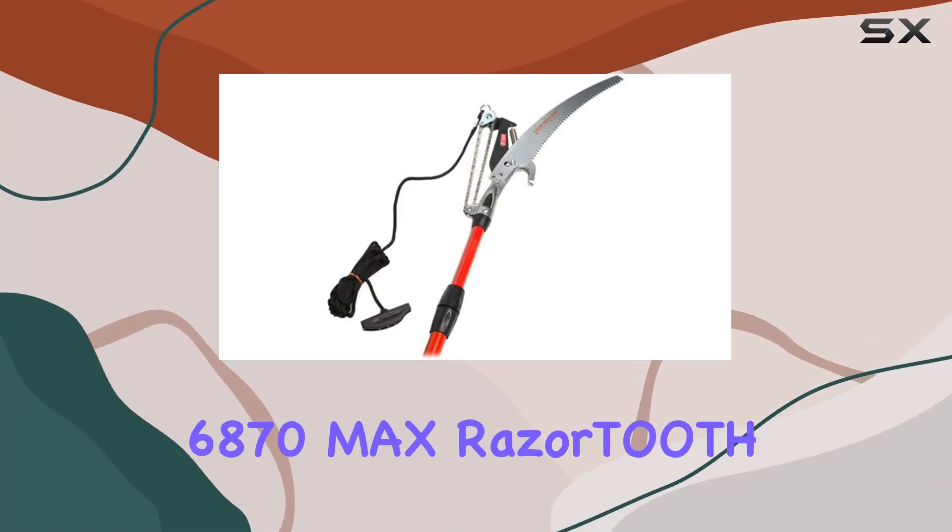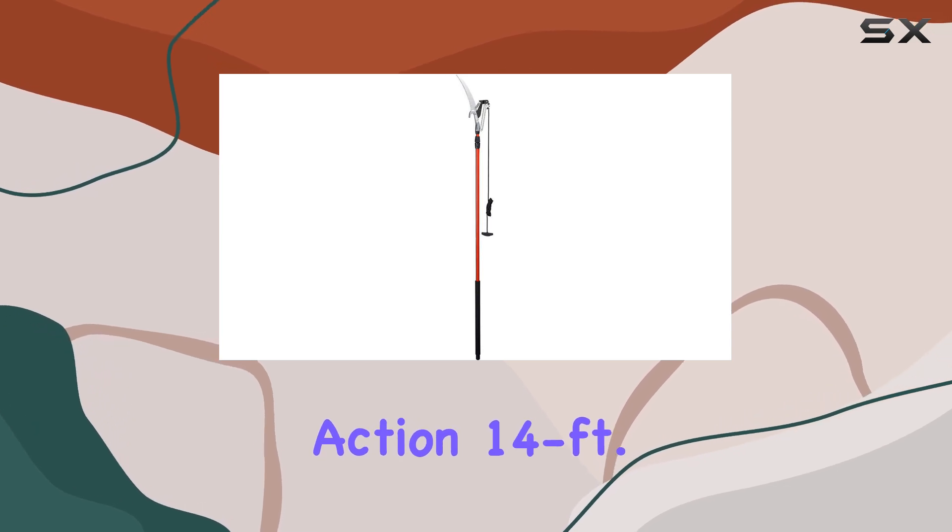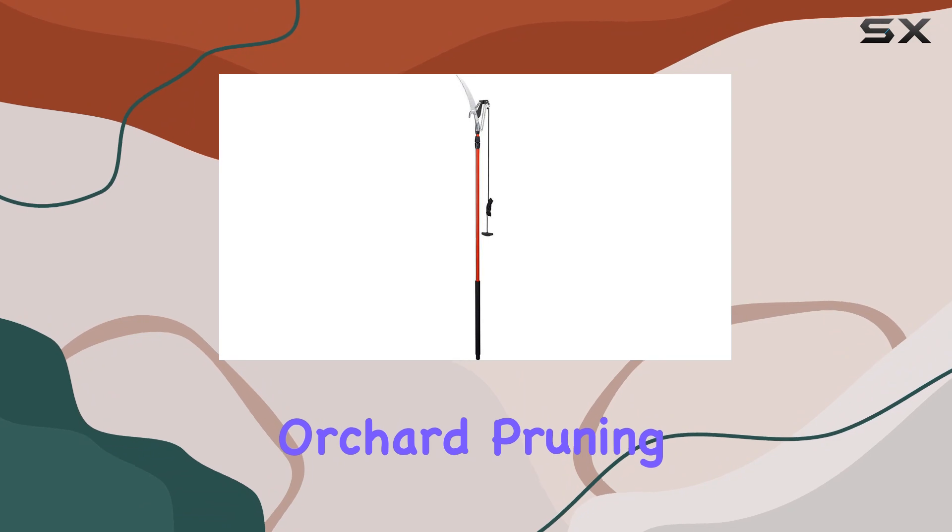The Corona TP68 70 Max Razor Tooth Dual Compound Action 14 Feet Tree Pruner is an exceptional tool designed for heavy-duty orchard pruning.